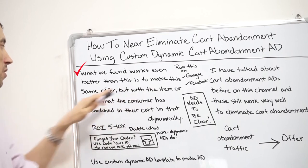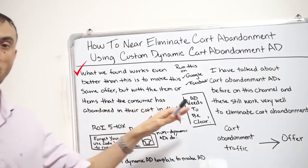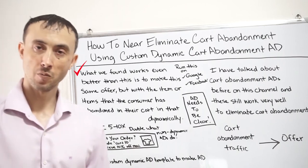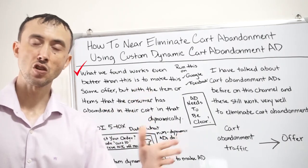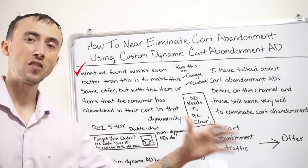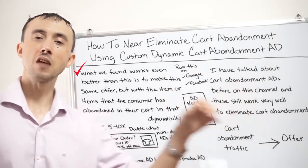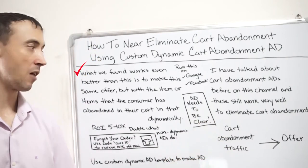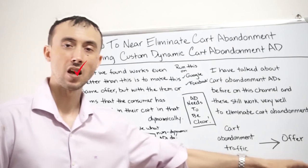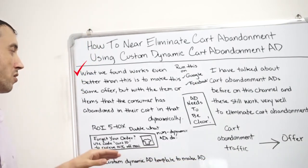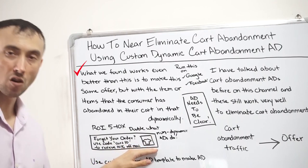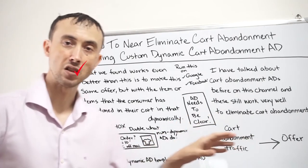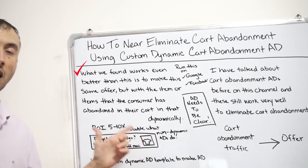What works even better than just having a typical offer like 'come back and finish your order, we'll give you ten dollars off' is to have the actual item or items the consumer was looking at — which would have been in their cart — shown in the ad, driven dynamically through scripting. But you don't just show them the product alone; that by itself would not perform as well as just offering the discount. You combine the picture of the shirt they were looking at with the offer for ten dollars off if they finish checkout now.